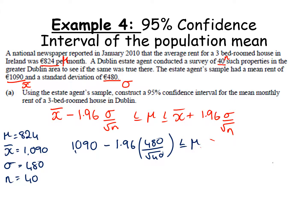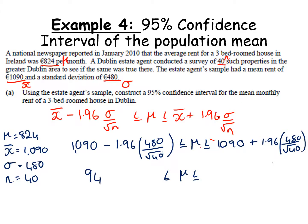Using the estate agent sample, construct a 95% confidence interval for the mean monthly rent. Substituting into our formula: 1090 minus 1.96 times 480 over root 40 is less than or equal to mu is less than or equal to 1090 plus 1.96 times 480 over root 40. Working this out and rounding to two decimal places for money, we get 941.25 ≤ mu ≤ 1238.75. The claimed value of €824 does not sit within this interval, which raises suspicion — but we'll talk about that in more detail when we look at hypothesis testing.